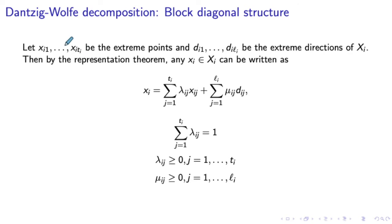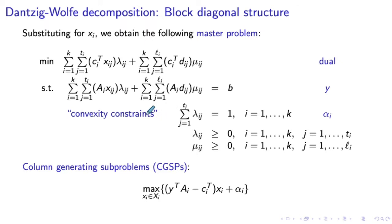Let's denote by Xi1 through Xi_Ti the extreme points of the set Xi (capital) — we have Ti extreme points for the set Xi (capital). Similarly, we will have Li extreme directions for this set Xi (capital), which we'll denote by Di1 through Di_Li. Then, by the representation theorem, if we look at the vector xi that belongs to the set Xi (capital), we can write it as a convex combination of the extreme points plus a linear combination of extreme directions of the set Xi. As part of this representation, we have the convexity constraints for lambdas and the non-negativity constraints for lambdas and μs. This is our complete master problem.